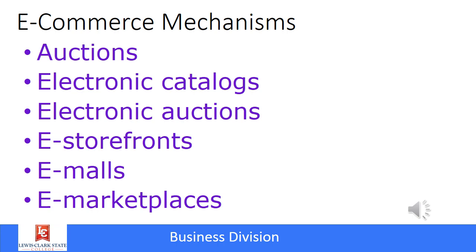Some of the specific methods used in e-commerce include auctions — one of the best-known is eBay. There are electronic storefronts, where you go to something like Amazon.com, or electronic malls. There are electronic marketplaces where you have a lot of buyers and sellers coming together, and Alibaba would be an example of a B2B, business-to-business marketplace.